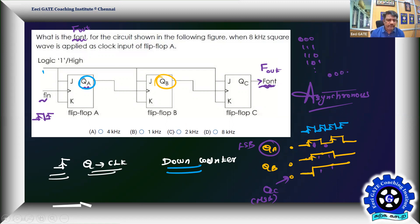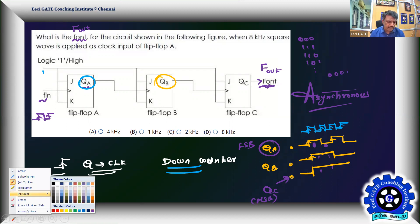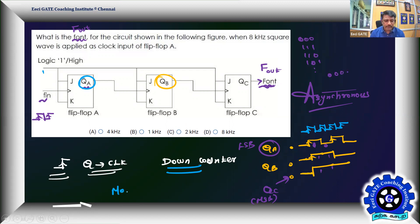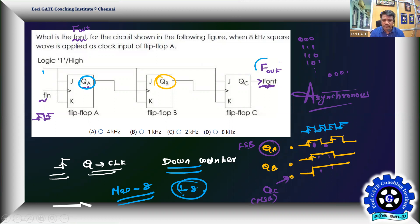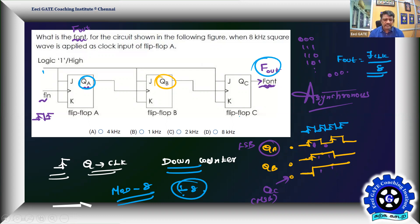There is no asynchronous clear, so the counter passes through all 2³ = 8 states — it's a full MOD-8 counter, which divides the clock by 8. Therefore F_out = F_clock / 8.